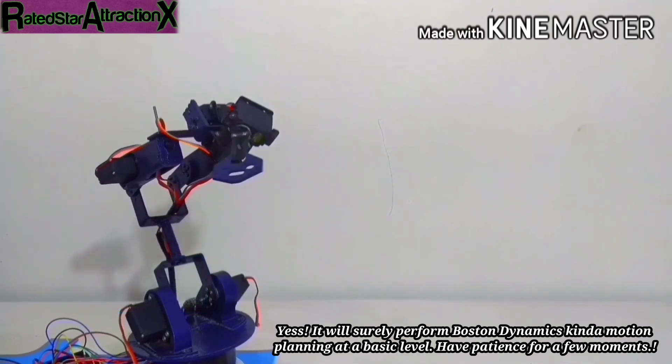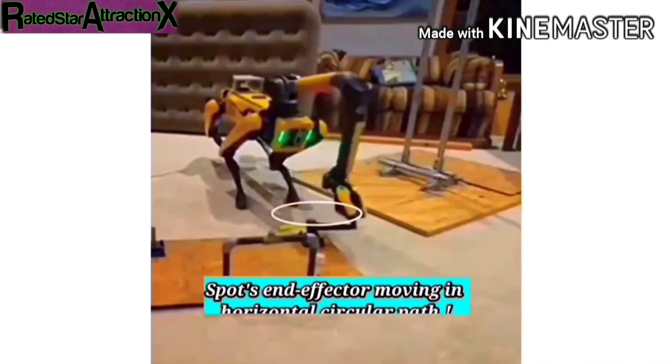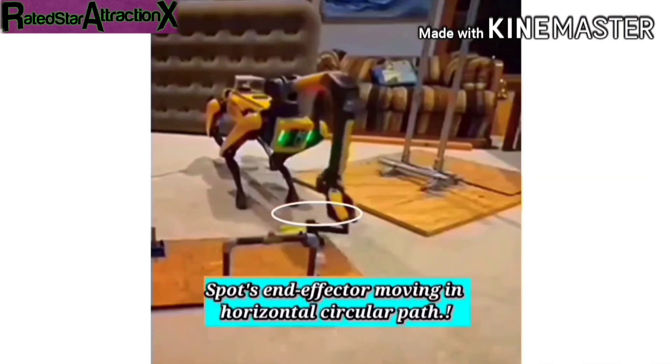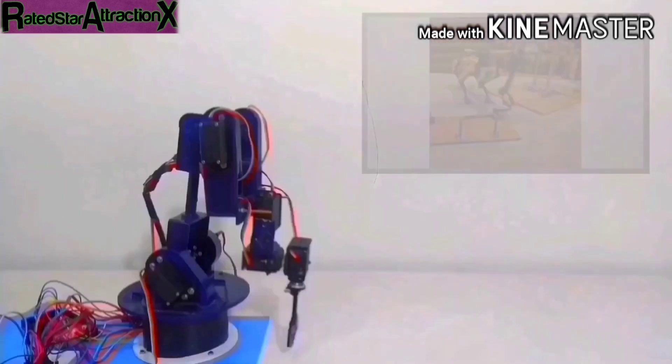As I told, this robotic arm has been inspired by Boston Dynamics, so let's have a look at Spot. Here, Spot is using his arm to rotate a crank in a horizontal plane by moving his end effector in a horizontal circular trajectory.